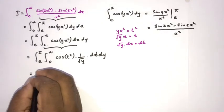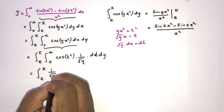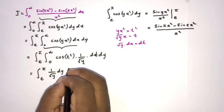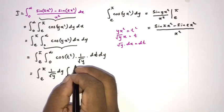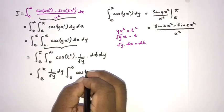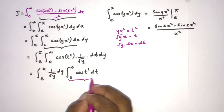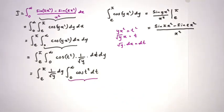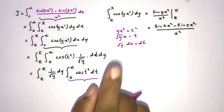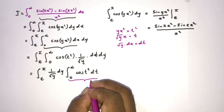This inner integral is a familiar Fresnel-type integral. We know the integral from zero to infinity of cosine of t squared dt equals the square root of pi over 8. I will add the link in the description and also make a card for reference.